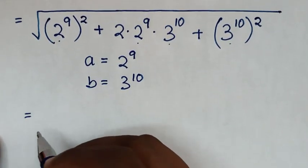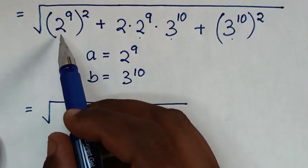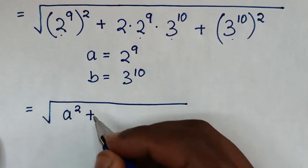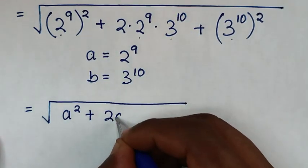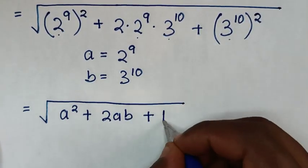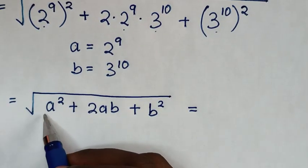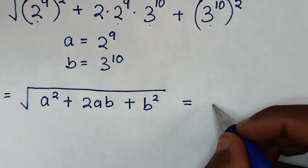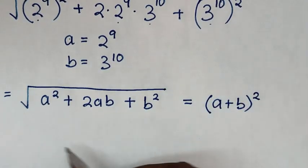So it will be 2 power 10, then plus 2ab, then plus b squared. This expression under the square root — a squared plus 2ab plus b squared — is a perfect square trinomial.